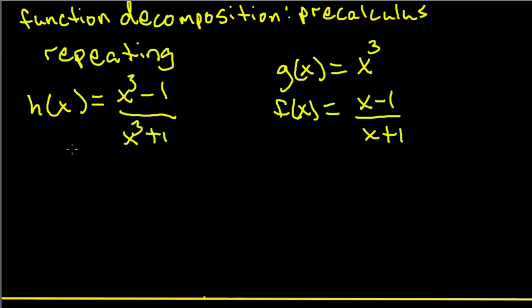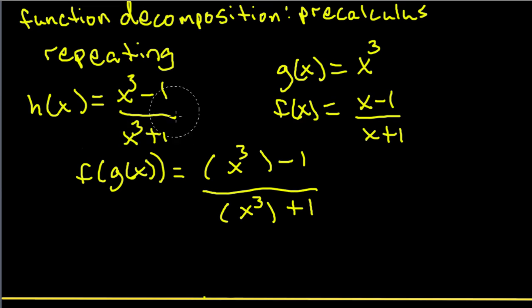So we got x minus 1 over x plus 1. So let's see if we did this right. If we compose f(g(x)) with these two that we found, we should get h(x). So we write out f(x) and for every x we put a parenthesis and in those parentheses we put g(x). And sure enough, we get back to our h(x). And that's simply what decomposing is. It's just taking composition backwards.